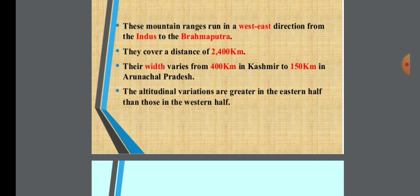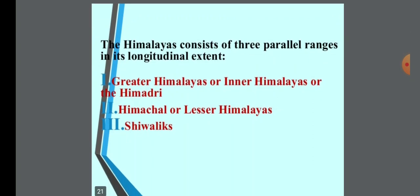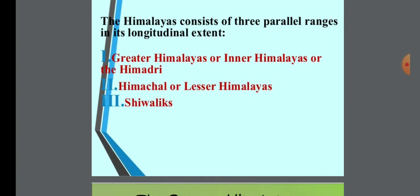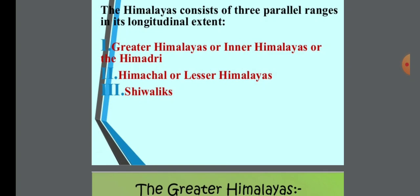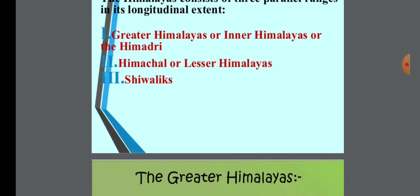The Himalayas consist of three parallel ranges in their longitudinal extent. The first is the Greater Himalayas, also called the Inner Himalayas or Himadri. The second is the Lesser Himalayas. The third range is the Shivalik, which is the outermost range.